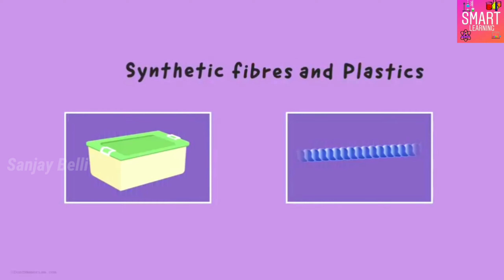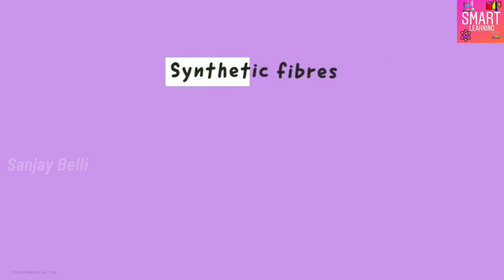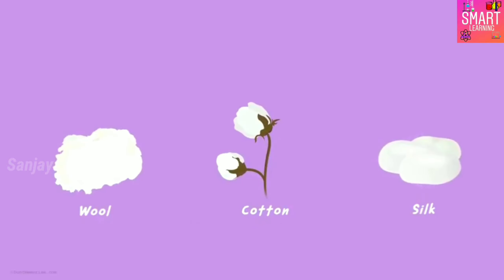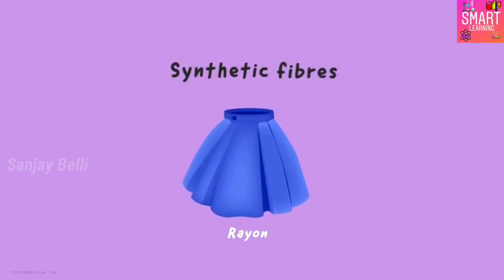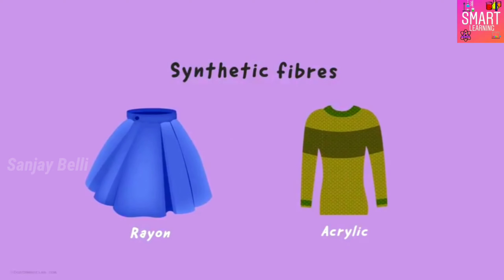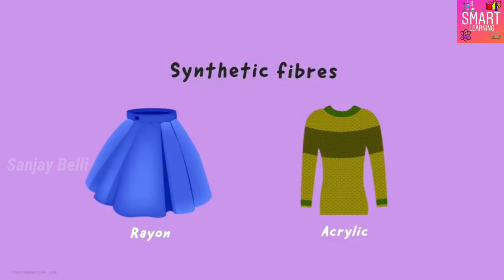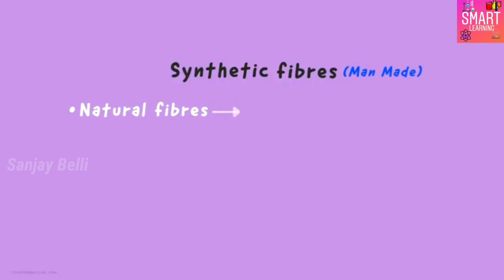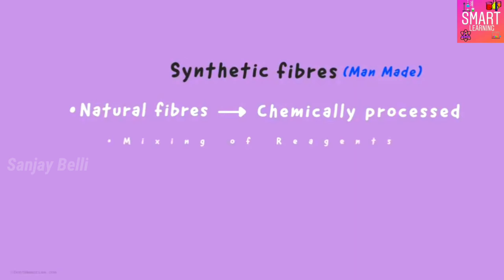Wait a second — what do you mean by synthetic fibers? We always use cotton, wool, or silk, which are naturally occurring. Of course we do know what synthetic fibers are. The shiny clothes made up of rayon and the warm and soft clothes made up of acrylic are all examples of synthetic fibers. As the name suggests, these are fibers made by man — natural fibers are chemically processed, or we can even combine a few reagents to get these artificial fibers.